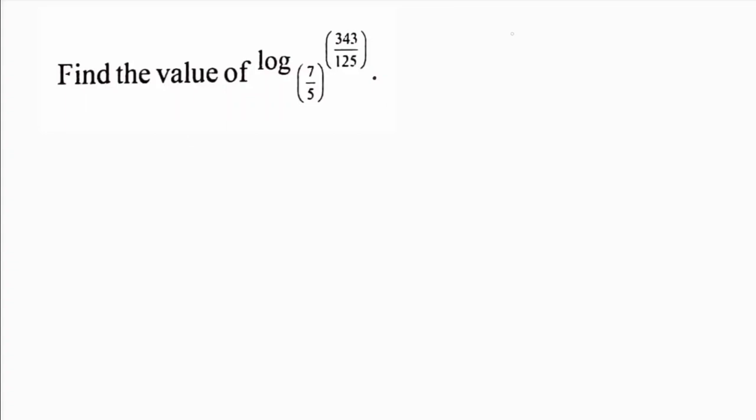343, if you do prime factorization, is 7 times 49 and 7 times 7.